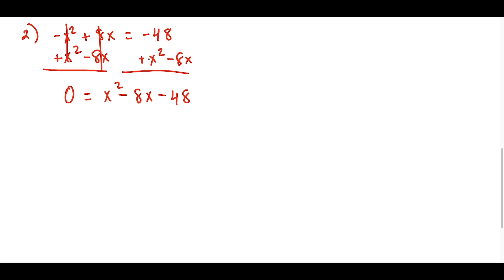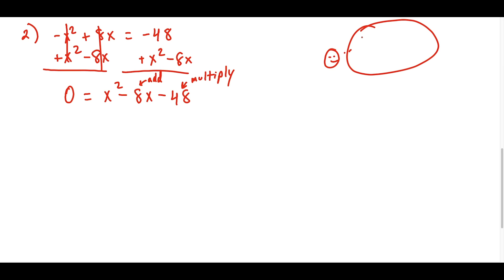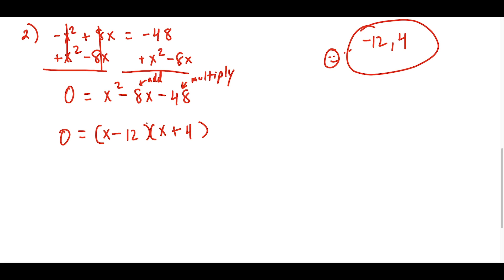The trick to factoring this quadratic is finding two numbers that add up to -8 and multiply to -48. If you think carefully, those numbers are -12 and 4, because -12 + 4 = -8 and -12 × 4 = -48. That tells you how to break the quadratic down into the factors (x - 12)(x + 4). You can verify by multiplying them back together.